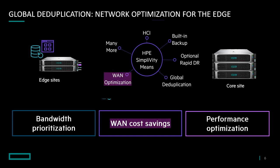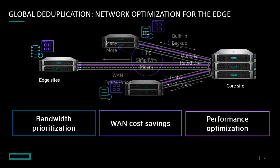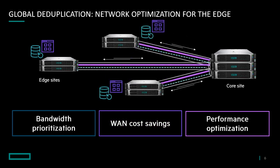SimpliVity also does WAN optimization by not sending data blocks that are already available globally across all sites and data centers.